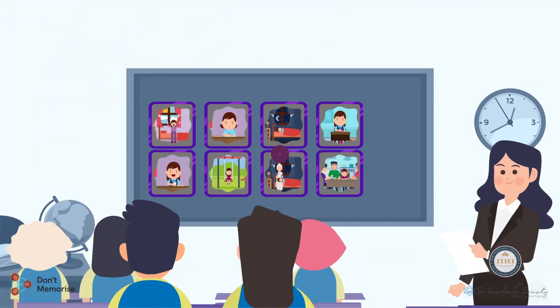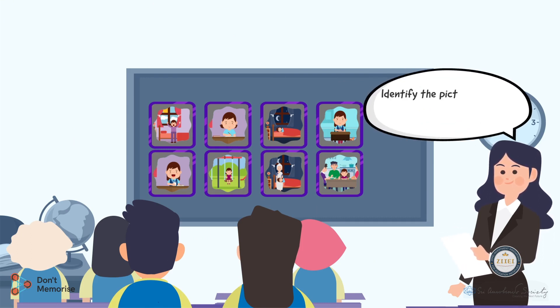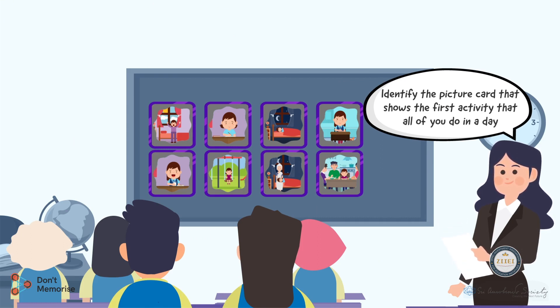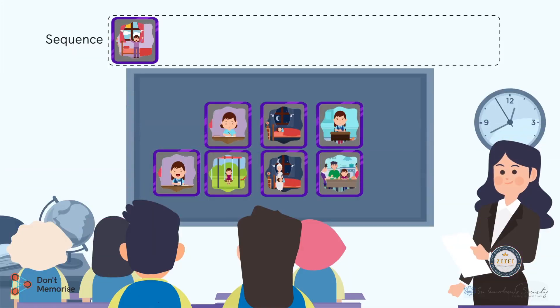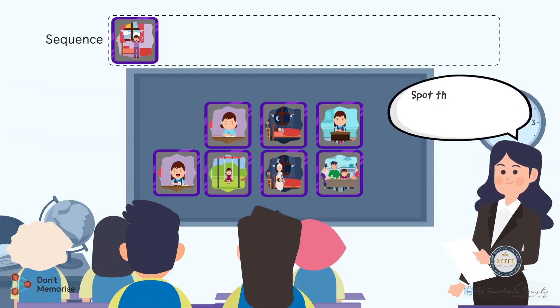After the students are done observing, inform them that today we are going to arrange these picture cards in a sequence. To initiate the sequencing activity, we will first need to ask some questions. Ask the students to identify the picture card that displays the activity which all of them do first in a day. Students will point to the picture card of the girl getting up with the rising sun. Place this picture card first in the sequence we are building.